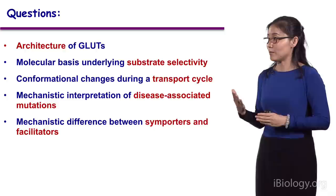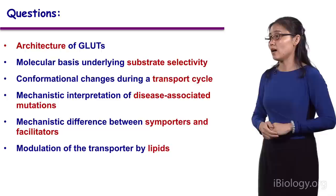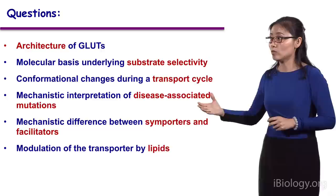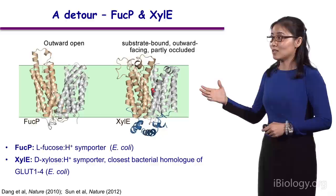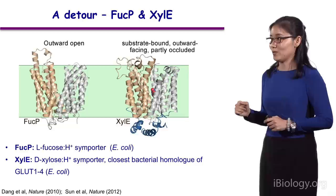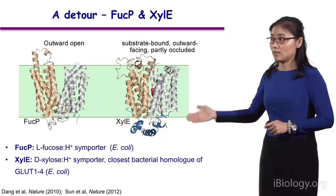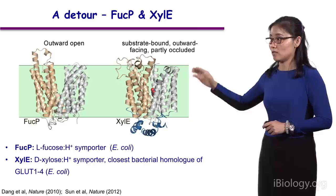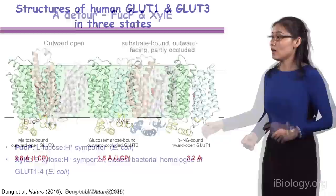We also hope to provide a molecular interpretation for all disease-related mutations. For my own research, I'm also very interested in the mechanistic difference between symporters, particularly proton symporters, and facilitators. Because membrane proteins are embedded in the lipid bilayer, we'd like to understand how they are modulated by lipids. To address these questions, we started not with glucose transporters, but their relatives from E. coli, which are technically easier. We determined the two structures of E. coli proton-sugar symporters, FucP and XylE — they exploit the transmembrane proton gradient to drive uptake of their substrate, either L-fucose or D-xylose, from a low-concentration environment to the high-concentration interior of the cell.